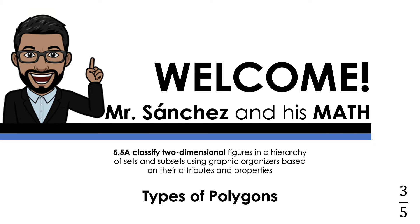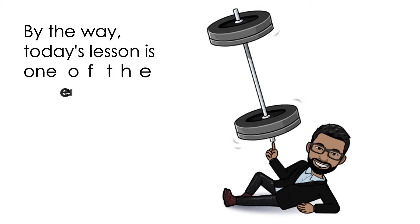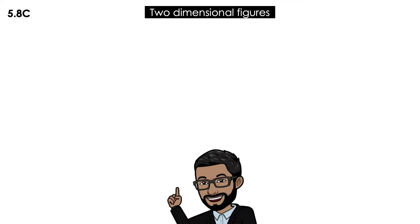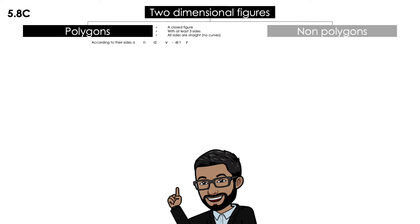This is lesson 3 out of 5. By the way, today's lesson is one of the easiest of all, so you only will need to count. As has been happening in the previous lessons, we're going to be working with this diagram. You know that two-dimensional figures could be divided into polygons and non-polygons. With that being said, we're going to divide the polygons according to their sides.